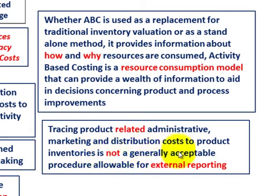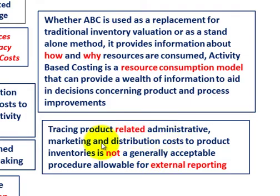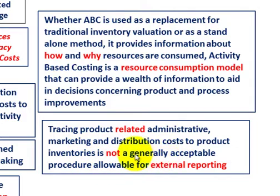However, tracing administrative, marketing, and engineering costs to product inventories is not a generally accepted procedure for external reporting. So if activity-based costing is used, those administrative and marketing costs must be removed from inventory valuation for external reporting purposes. While these costs are vital for determining the actual internal cost of inventories, they cannot be included for external reporting. That pretty much summarizes activity-based costing and how it fits into a five-part accounting system.